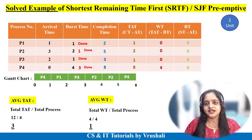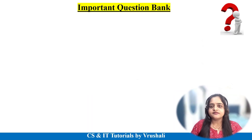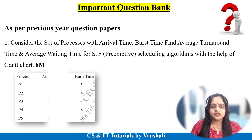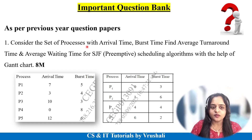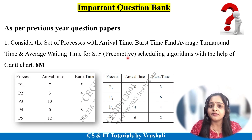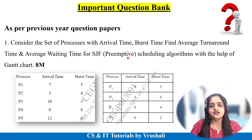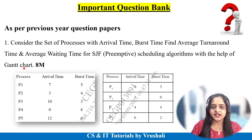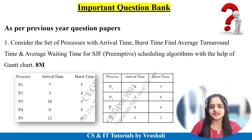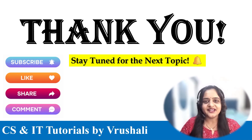As per the previous year question paper, they ask this kind of question: consider a set of processes with given arrival time and burst time, then find the average turnaround time and average waiting time using the SJF preemptive algorithm. Note that SJF preemptive and SRTF — Shortest Remaining Time First — are the same. Use the same concept for solving these examples, and you also need to draw the Gantt chart. This question is asked for 8 marks. So practice this. Thank you so much, stay tuned for my next video. Keep learning.